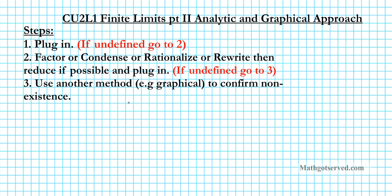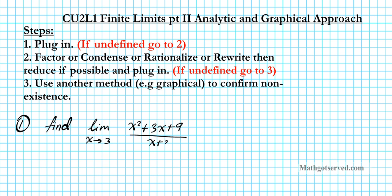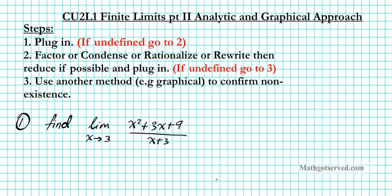Let's go ahead and take a look at question number 1. We want to find the limit as x approaches 3 of x squared plus 3x plus 9, divided by x plus 3. So first we are going to plug in — substitute the value that the limit is approaching into the variables. We're going to have 3 squared plus 3 times 3 plus 9, over 3 plus 3. Notice that in the denominator we have a non-zero value, so that indicates we are not going to have an undefined expression, which is good. We don't need to go to step 2 or 3.